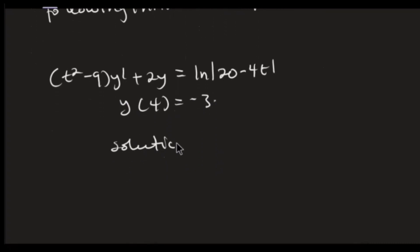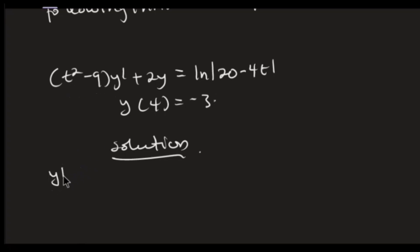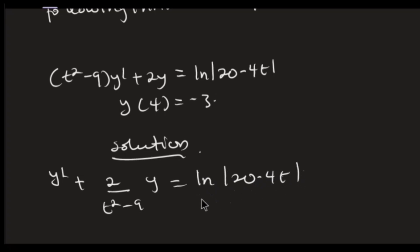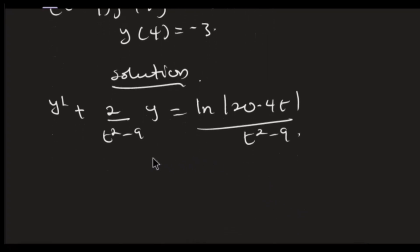t squared minus 9 multiplying y prime plus 2y equals the natural log of 20 minus 4t. To do this, first express this in linear form by making the coefficient of y prime equal to one. Dividing through by t squared minus 9, I get y prime plus 2 over (t squared minus 9) times y equals ln(20 minus 4t) all over (t squared minus 9). At this point, p(t) is this coefficient and g(t) is the right-hand side.